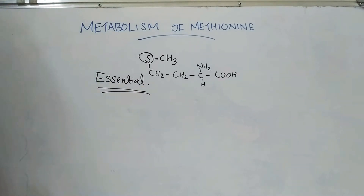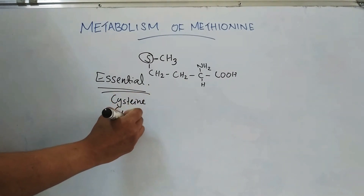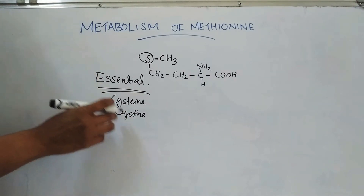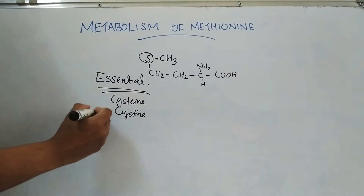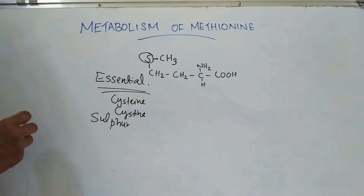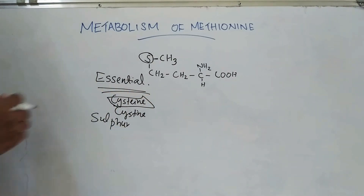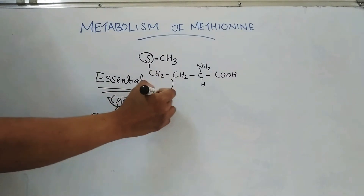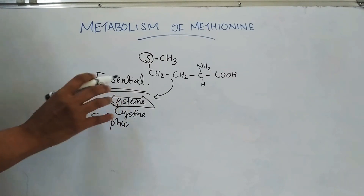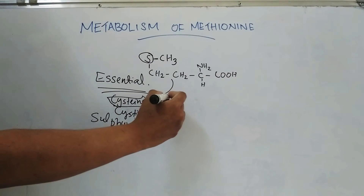Other sulfur-containing amino acids are cysteine and cystine. Methionine, cysteine, and cystine are the principal sources of sulfur in the body. Cysteine is not essential and can be synthesized in the body from methionine. The presence of cysteine and cystine in the diet reduces the requirement of methionine, and this is known as sparing action.